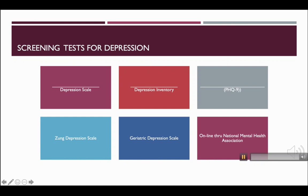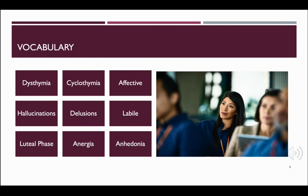There are a variety of screening tests for depression that screen for these symptoms. These include the Hamilton Depression Scale, the Beck Depression Inventory, the Patient Health Questionnaire — otherwise known as the PHQ-9, which has nine questions — the Zung Depression Scale, the Geriatric Depression Scale, and the National Mental Health Association has some other online screening tools for individuals.